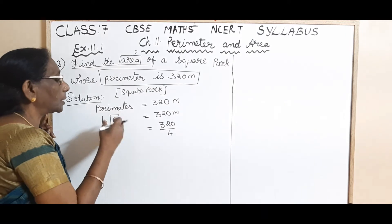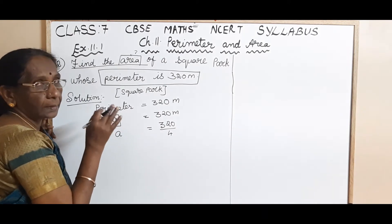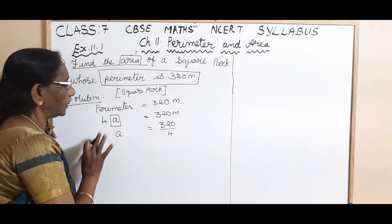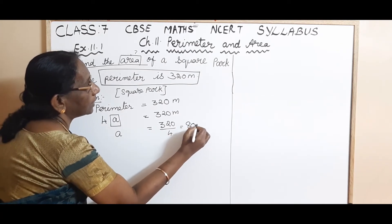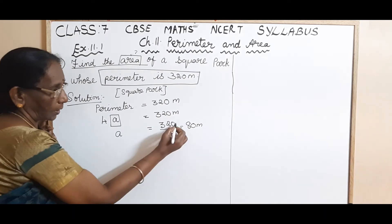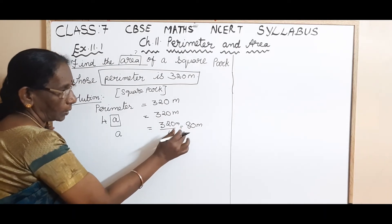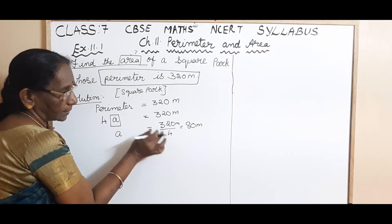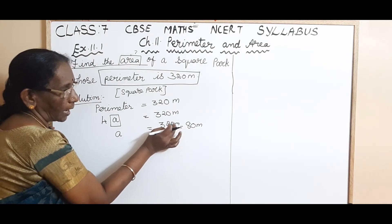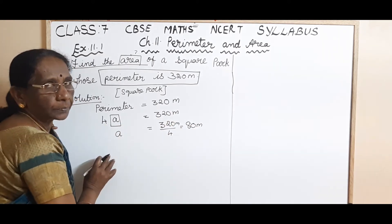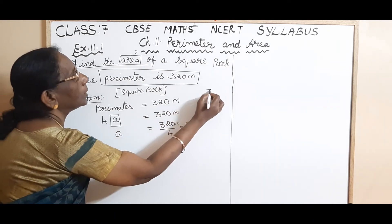So A is equal to 320 divided by 4. As usual, we will be using that is how we solve the simple equation, that method only. So this is equal to 80 meter. So this is equal to 80 meter. 80 meter by 4. So it is easy. 4 goes 8 times. 8 fours are 32. And add the 0.